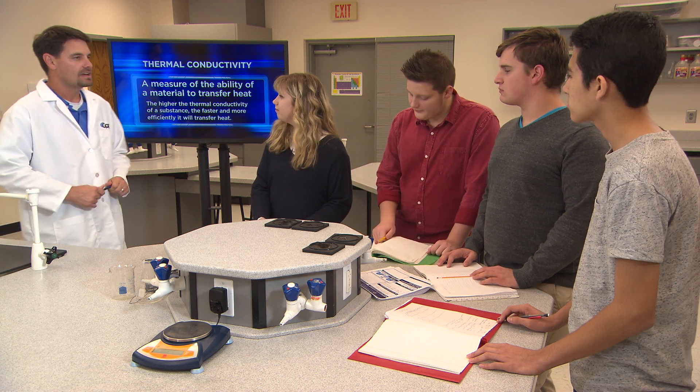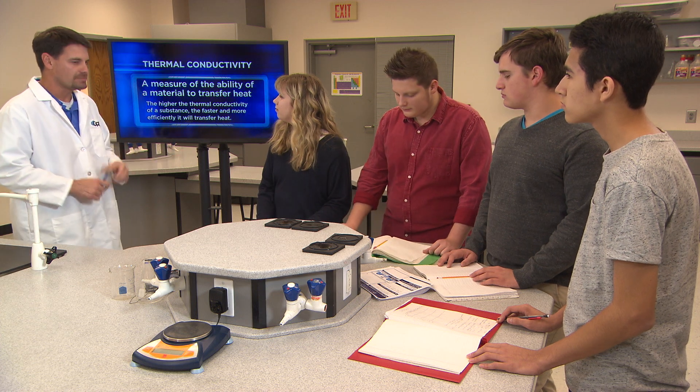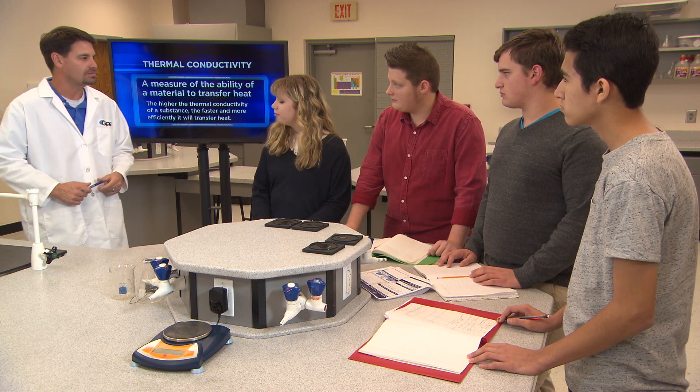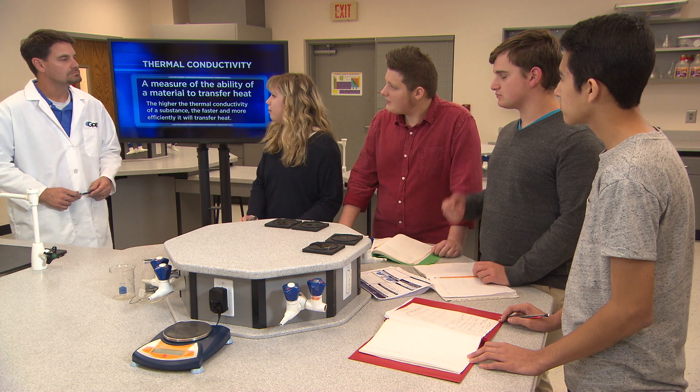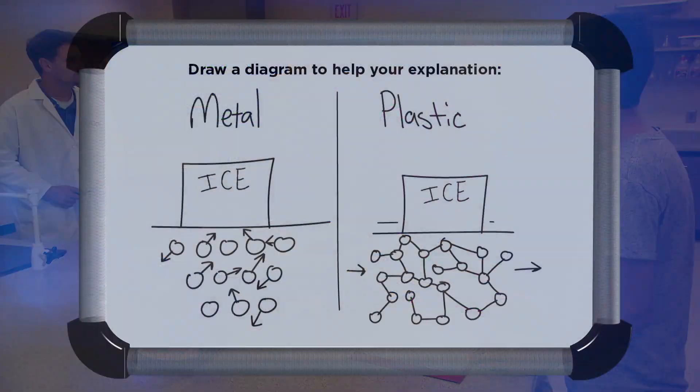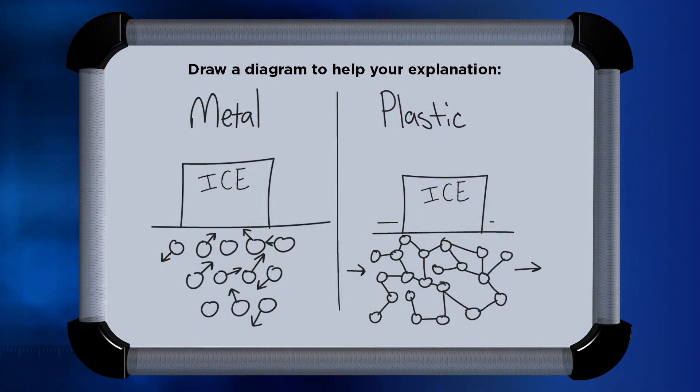How did you explain the fact that the metal block melted the ice faster than the plastic? Our explanation is pretty similar to theirs. We did a little research and read that plastic is a huge molecule with all of its atoms bonded to each other. And the metal is more like a bunch of unbonded atoms whose electrons are free to move around. Heat is transferred when particles collide with each other. We drew our model to show the atoms' electrons in the metal moving more easily than the molecules in the plastic.